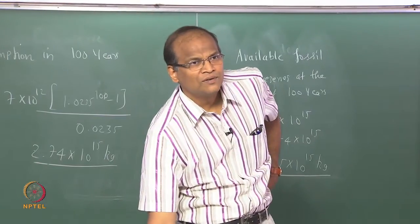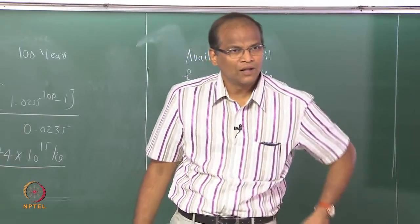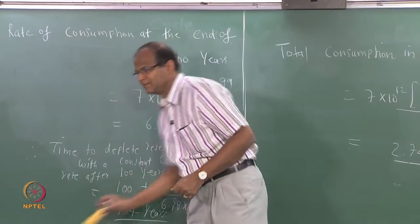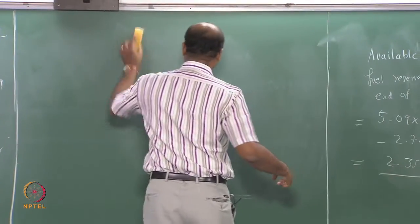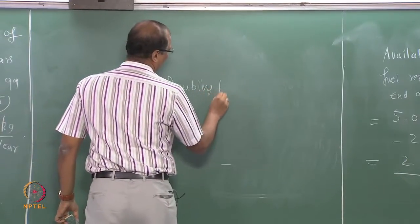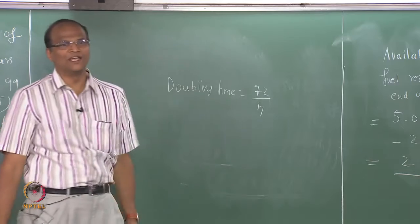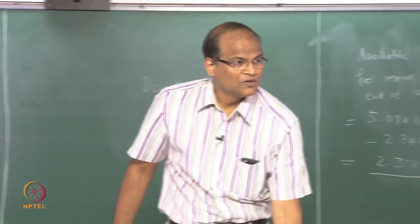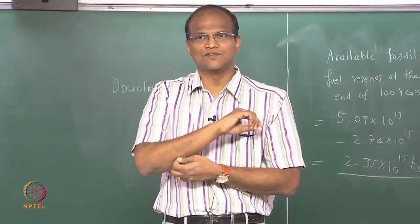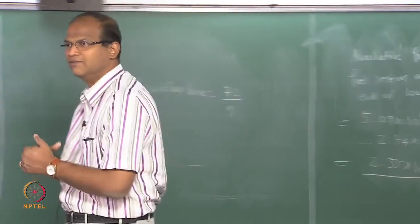Do you know the doubling time? The doubling time is 72 divided by n, where n is the interest rate in percent. So if a bank gives simple interest of 12%, in 6 years the money will double; at 6% compounded interest it will double in 12 years. 72 by n is the formula.